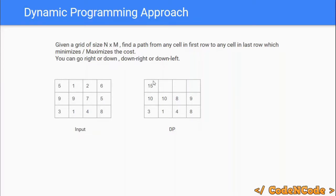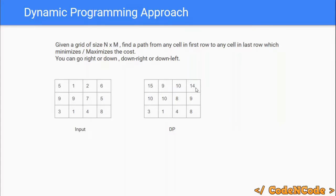So if you start from that cell the minimum cost to reach the end goal is 15, corresponding to the path 5 + 9 + 1. For the second cell, the minimum of the three options is 8, giving 8 + 1 = 9. For the third cell, minimum is 8, giving 8 + 2 = 10. For the fourth cell, minimum is 8, giving 8 + 6 = 14.